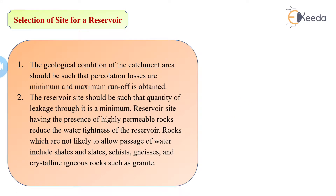The reservoir site should be such that the quantity of leakage through it is minimum. The presence of highly permeable rocks reduces the water tightness of the reservoir. Rocks not likely to allow passage of water include shales, slates, gneiss, and crystalline igneous rocks such as granite.